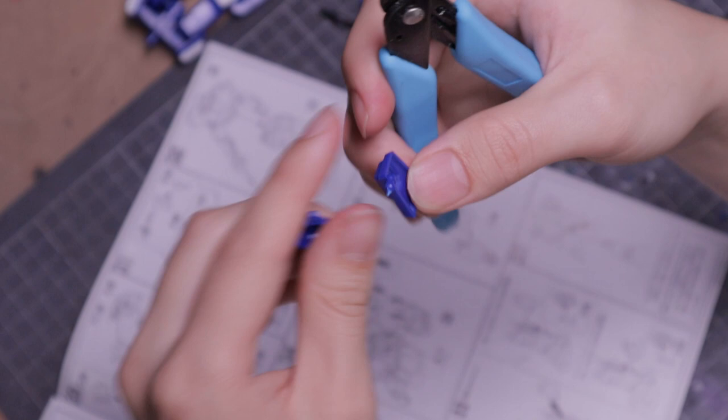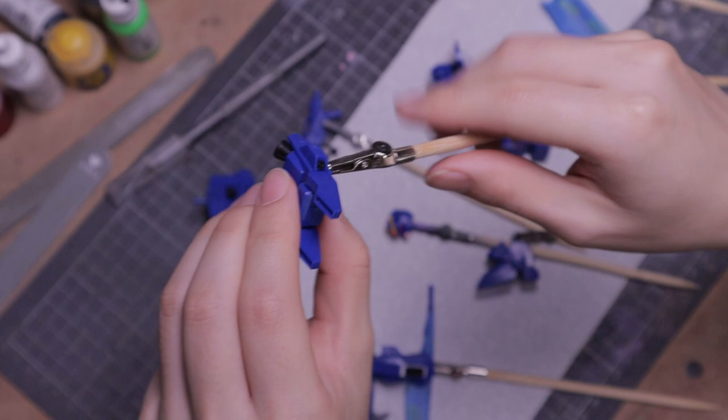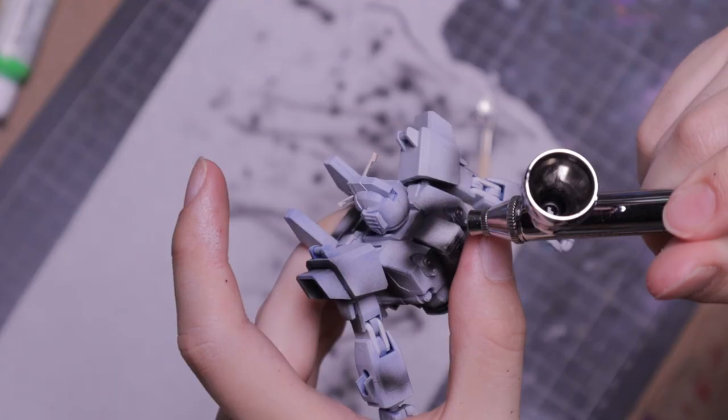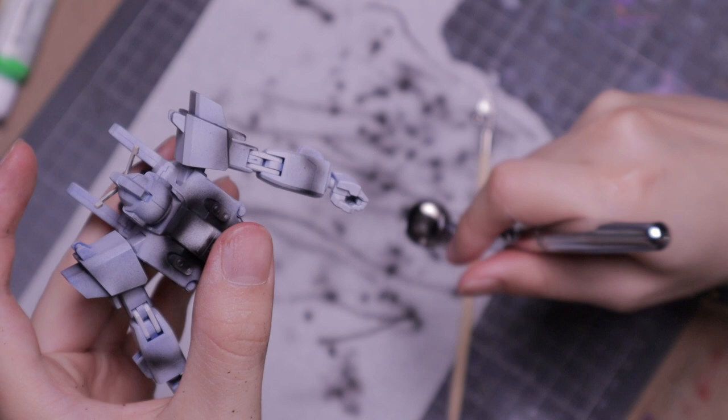I prepare my parts for painting. Prime everything white. Then I do a pre-shade with black. Just to give the model kit a nice gradient. Just to help me keep track of everything, I paint each part by subassembly.